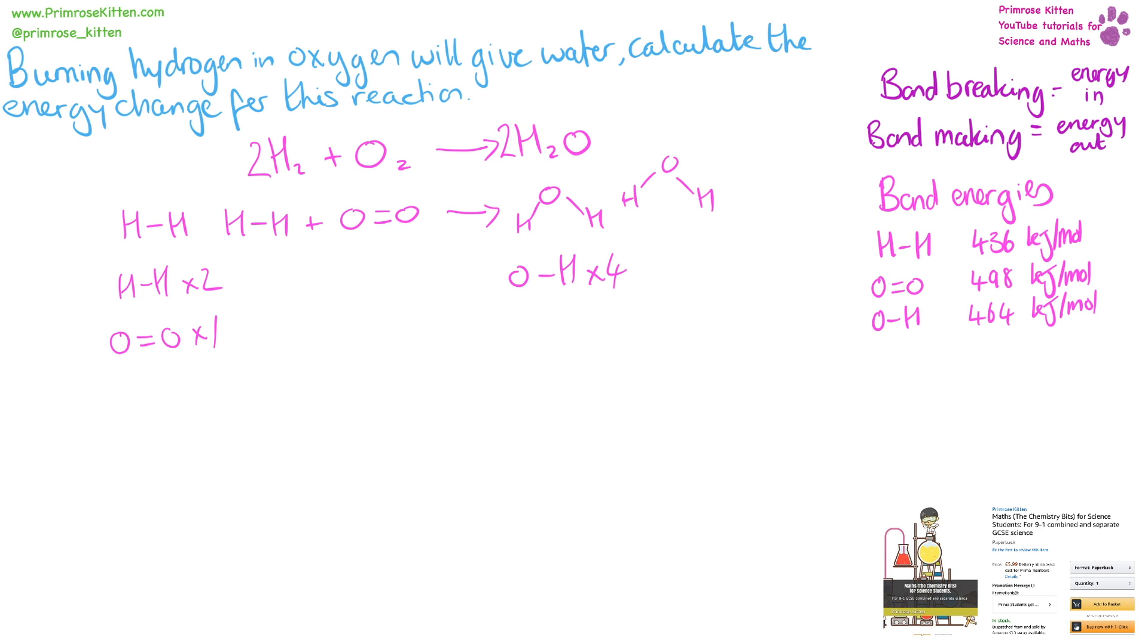And now we need to take that and multiply it by the bond energies. So two bonds for hydrogen, that's 2 × 436, one times 498, four times 464. We can do the maths and work out how much is on each side, adding those up. 872 plus 498 gives us 1370. There's just 1856 on that side.